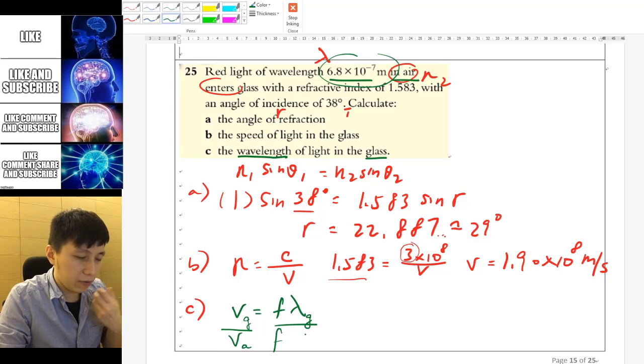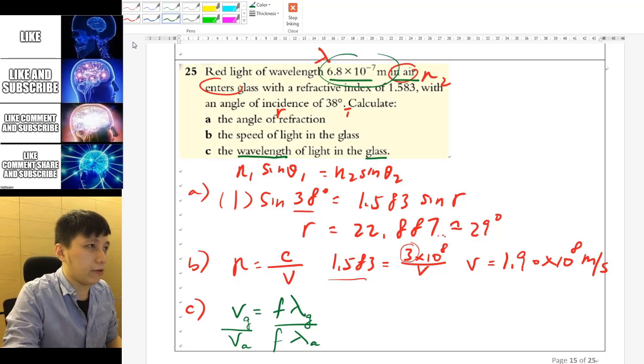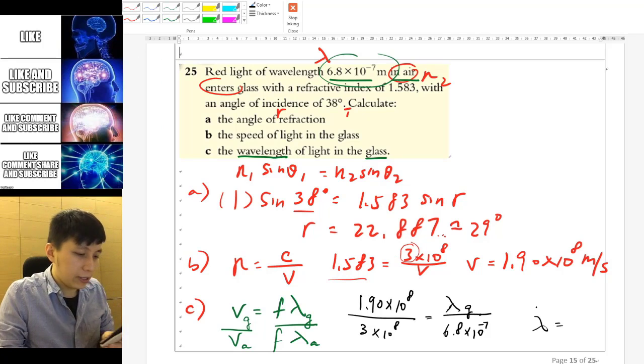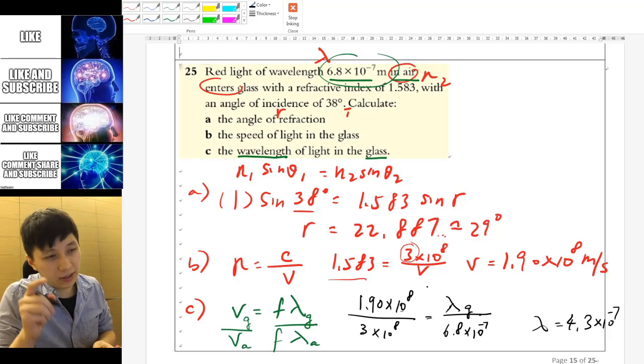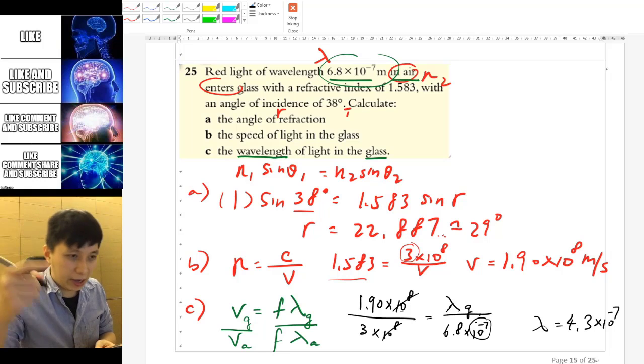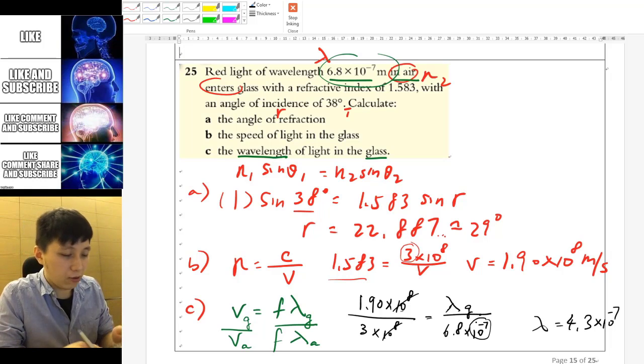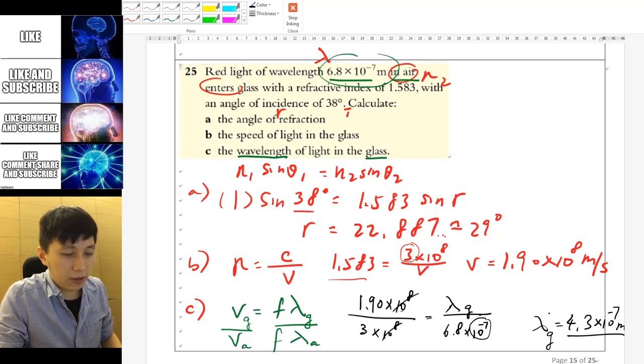So frequency will remain the same as in the one you can get somehow from the information. So this is a hint to help you to solve this question. And so what I would recommend you to do is to label it carefully. So this v is referring to the velocity in glass, lambda is the wavelength in glass also, frequency doesn't really matter. And then you can actually simply apply the same equation for air. After substitute in and use your calculator, the answer should be 4.306, so let's take it's 4.3 times 10 to the power of negative 7 meters.